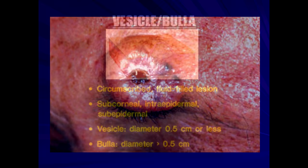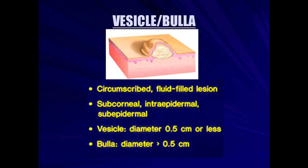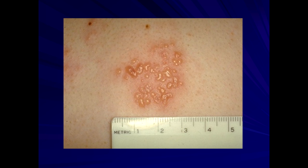Vesicles are distinguished from bullae: a bulla is larger than 0.5 centimeters, a vesicle is 0.5 centimeters or less. These are blisters, and we have different terms based on size. Here you see grouped erythematous vesicles with erythema, which would be very characteristic of shingles — herpes zoster — where you see the grouped vesicles.